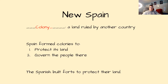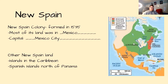Spain formed colonies to: one, protect its land, and two, govern the people there. The Spanish built forts to protect their land. The colony of New Spain was formed in 1535, with most of its land in Mexico and its capital in Mexico City. So you can fill in those notes: New Spain colony formed in 1535, most of its land in what is now Mexico, capital Mexico City.